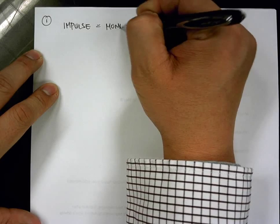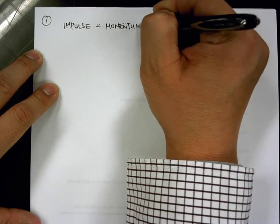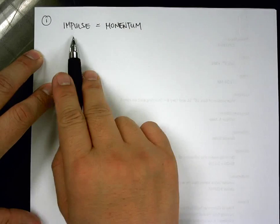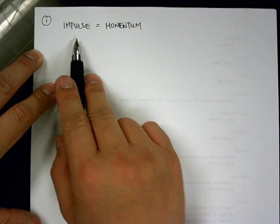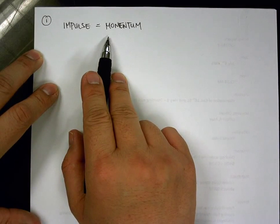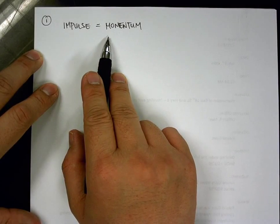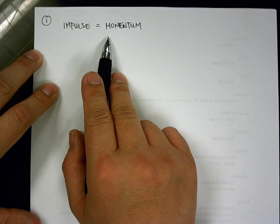So we know that Impulse Momentum Theorem is impulse is equal to the momentum of an object. So what this basically states is that an impulse is required to change the momentum of an object, whether it's to move an object or to stop an object.